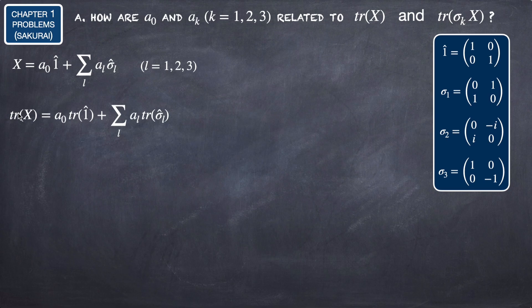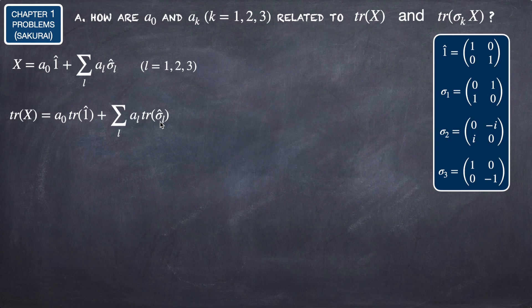Now, what is the trace of X? The trace of a sum is going to be the sum of the traces. So the trace of X is going to be the trace of the A0 term and the trace of every term in the summation, resulting in A0 times the trace of the identity plus A_L times the trace of each sigma matrix.